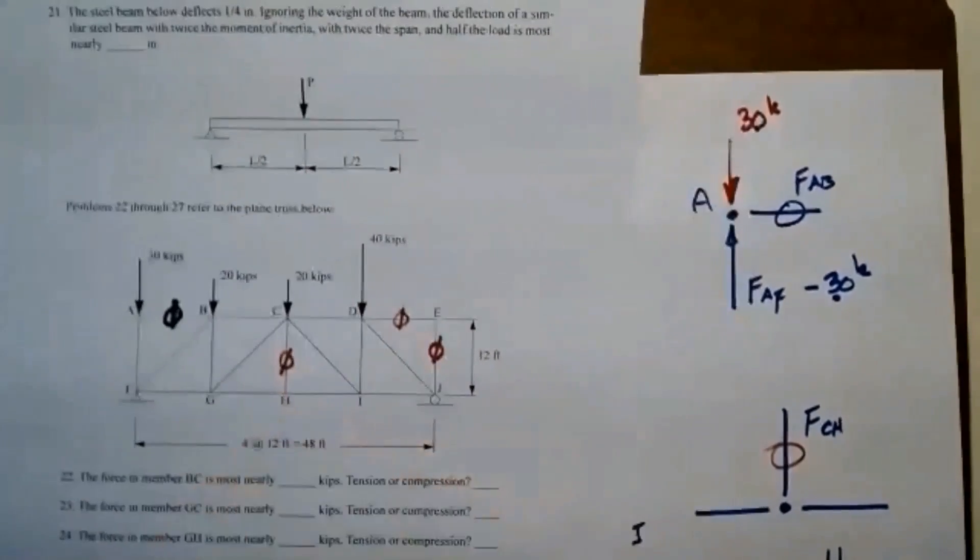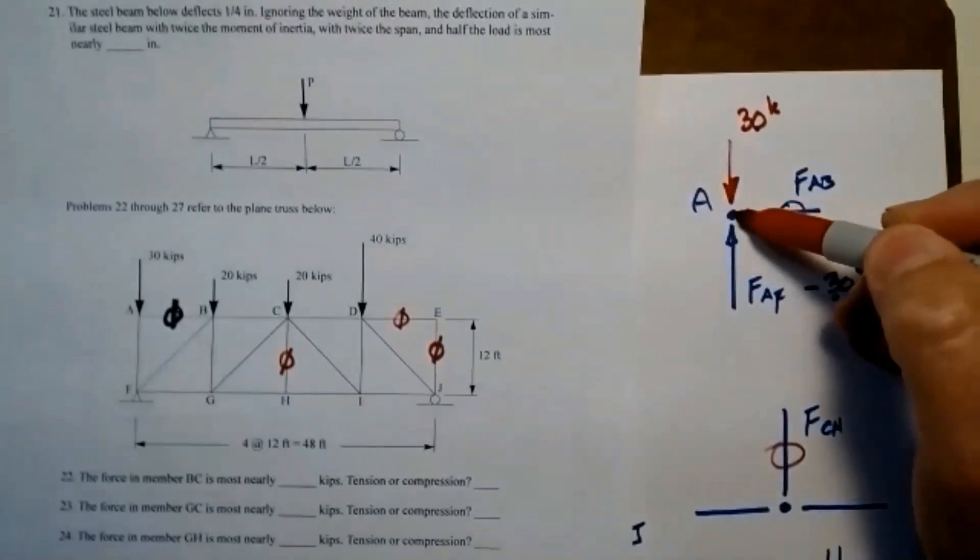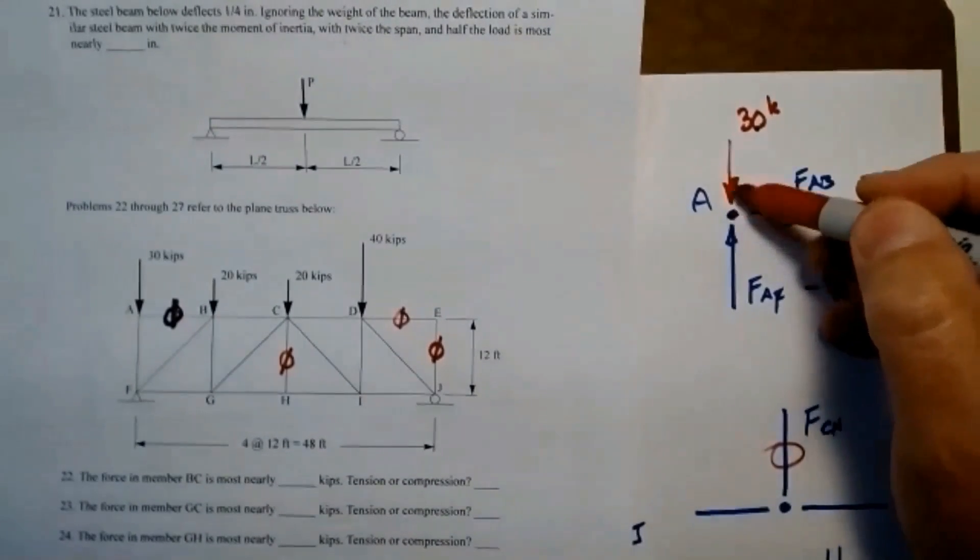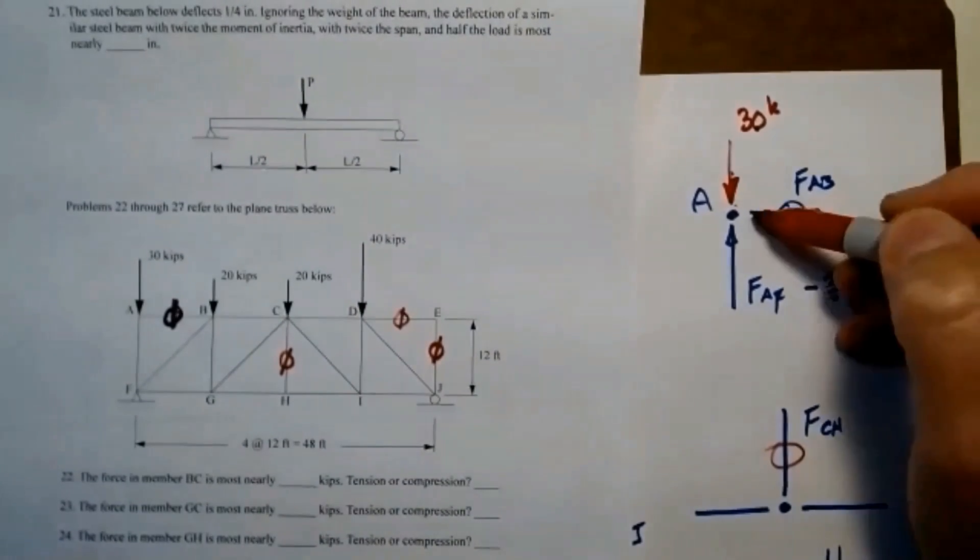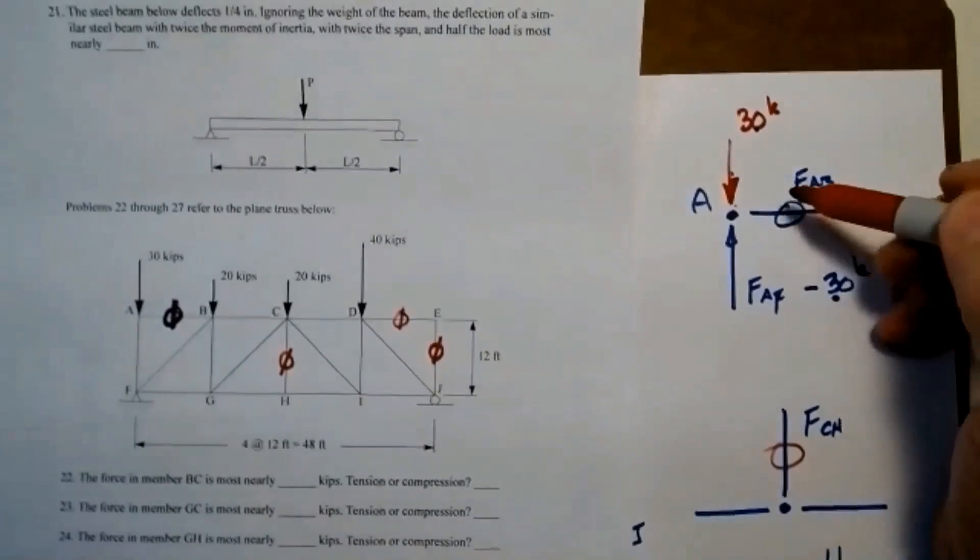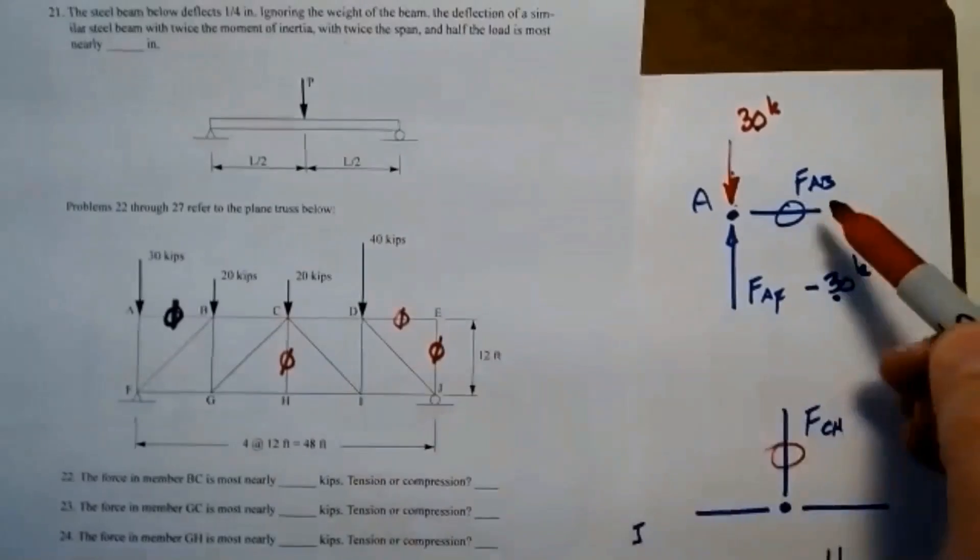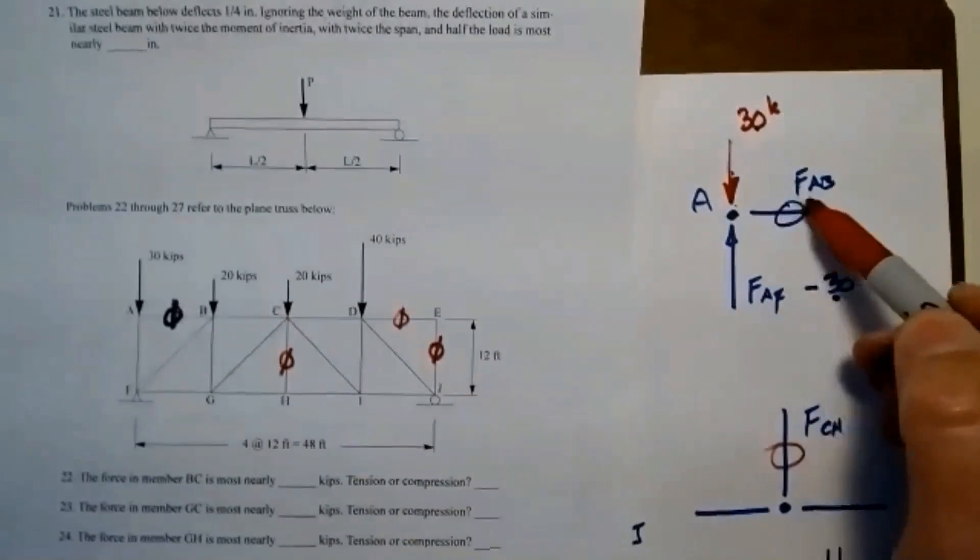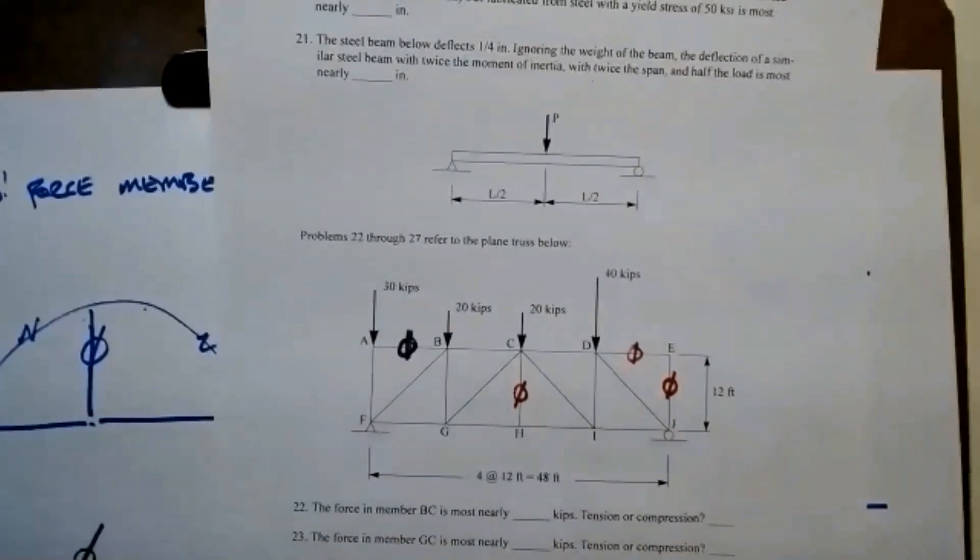Now I realize that from a structural standpoint, you may very much want to have this member here to brace this laterally where this load is being applied. And so this may be necessary for stability, but as far as solving for the magnitude of the forces within the truss system, this has no load demand in the configuration that we have here when we're looking at statics.